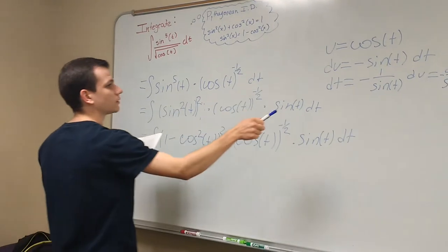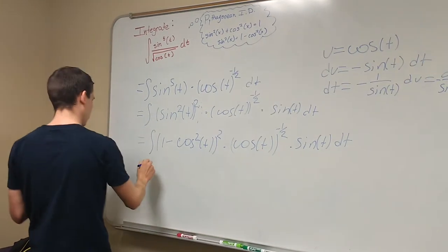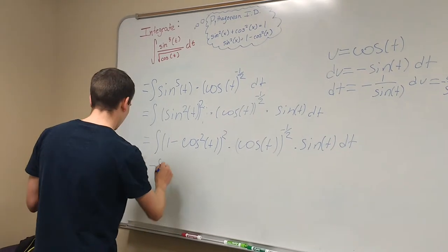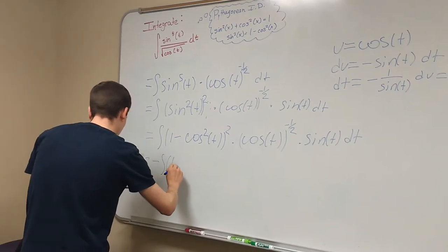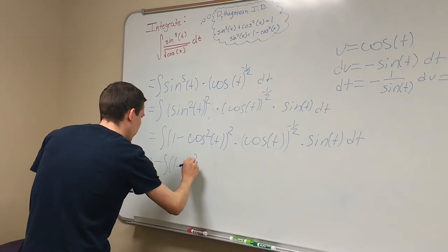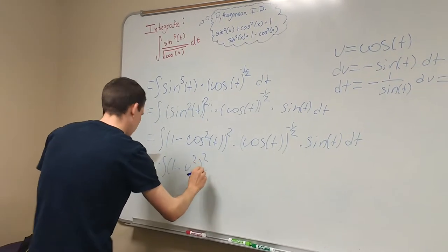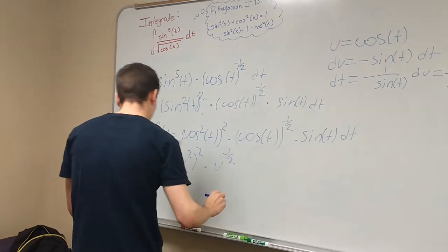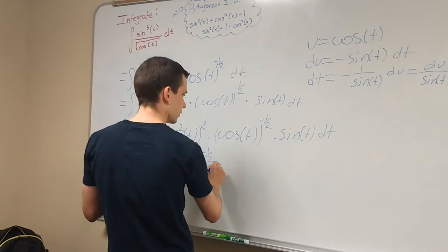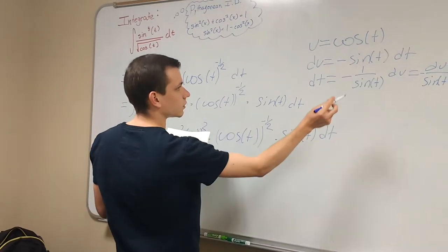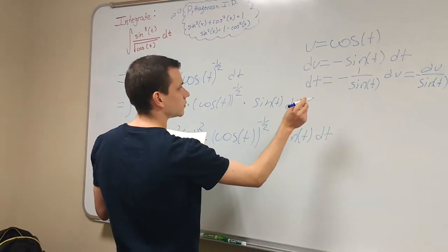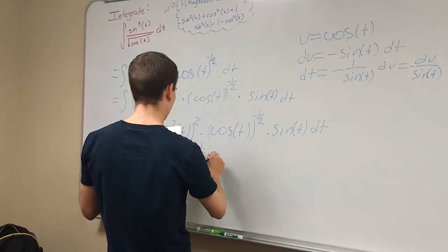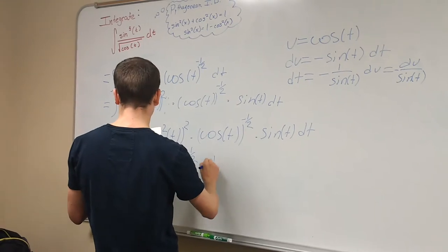So we're just going to bring the negative as a constant in front of the integral for easier use. And the function becomes one minus u squared squared, multiplied by u to the negative one half. And we're going to plug in du. The sine is going to cancel, so all that's left is just du.